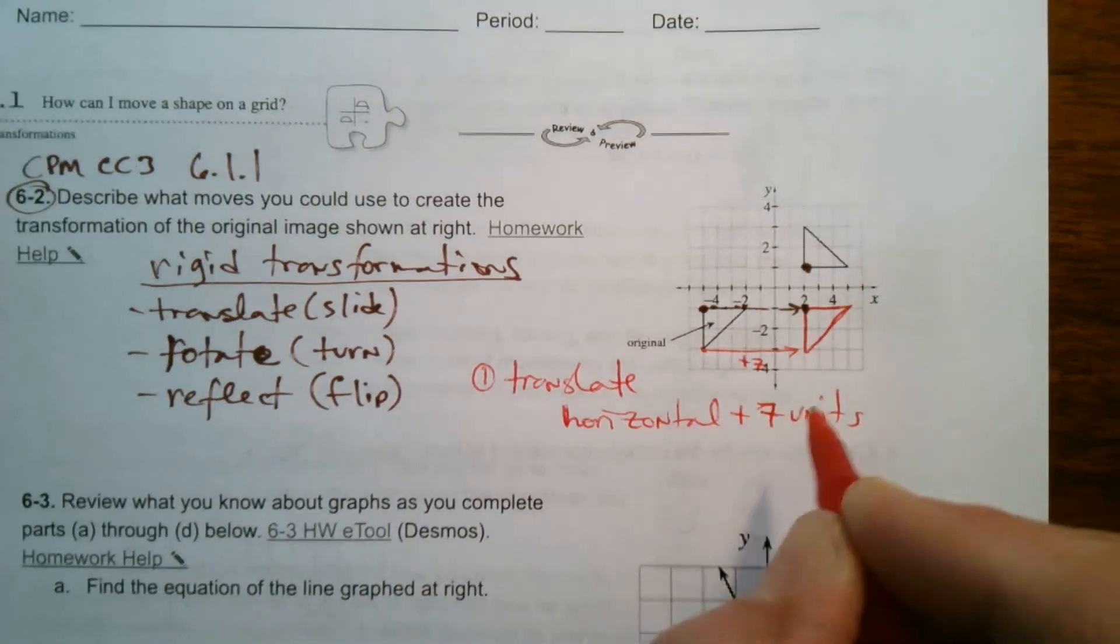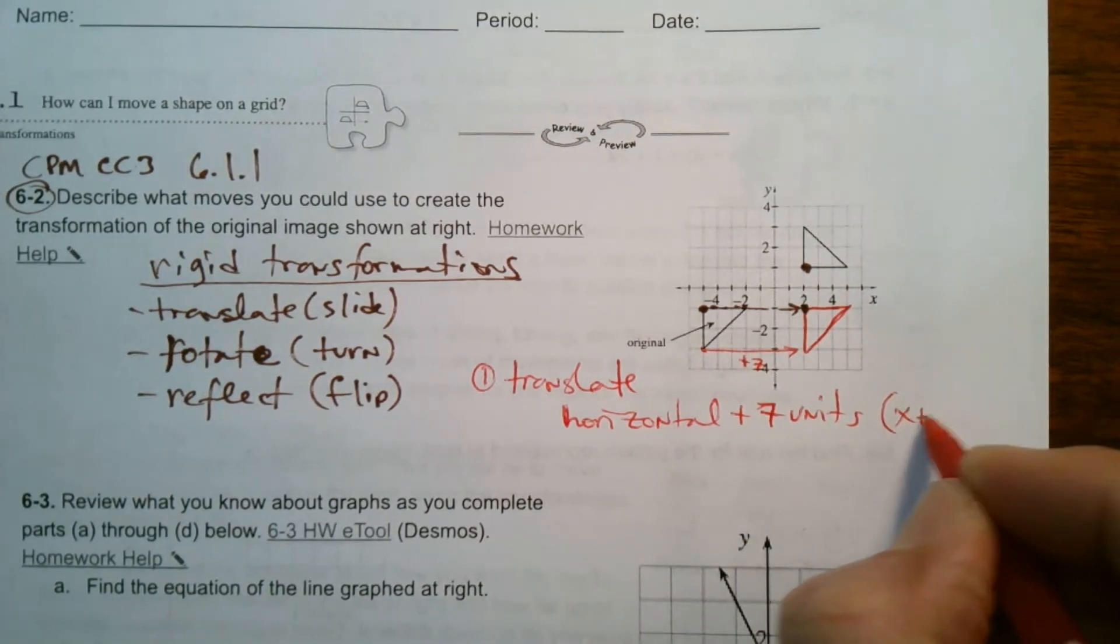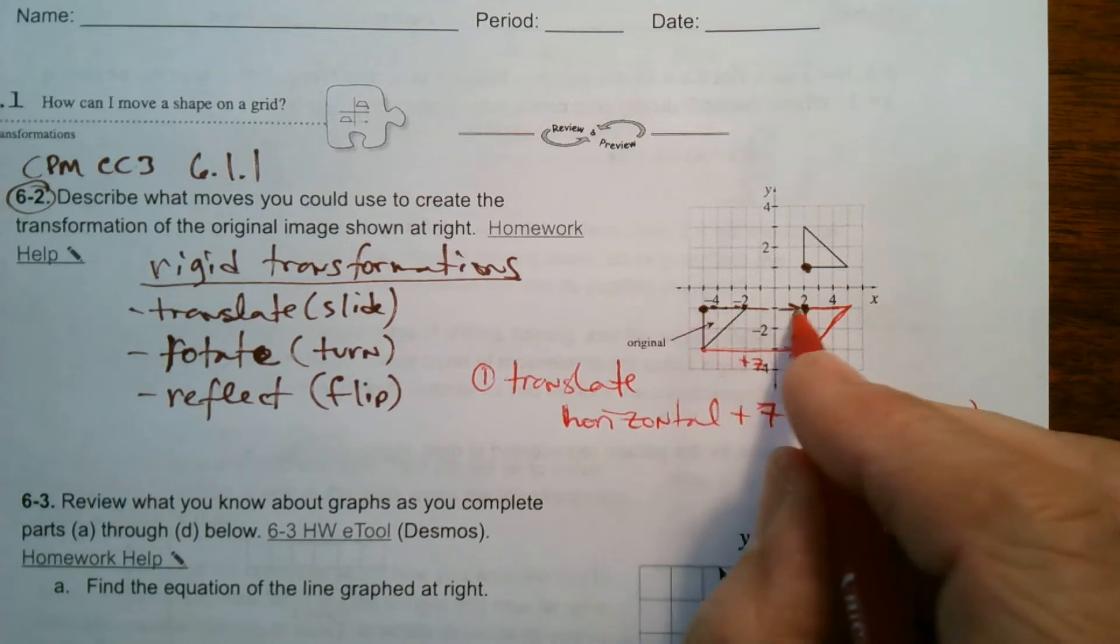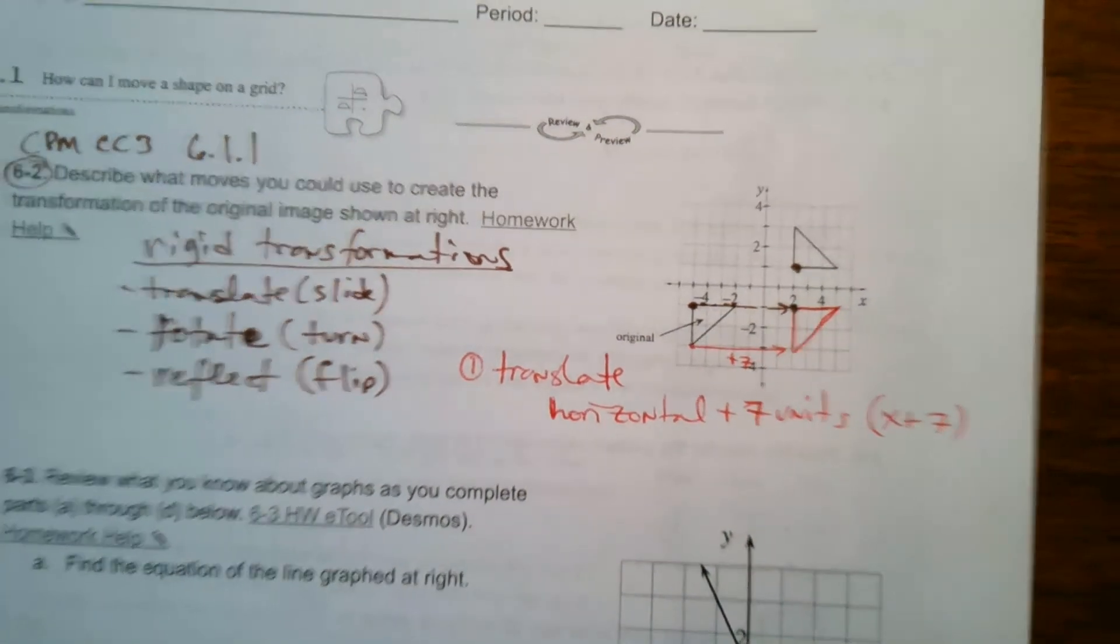Plus seven units. In other words, that's X plus seven, is taking your X value and adding seven.